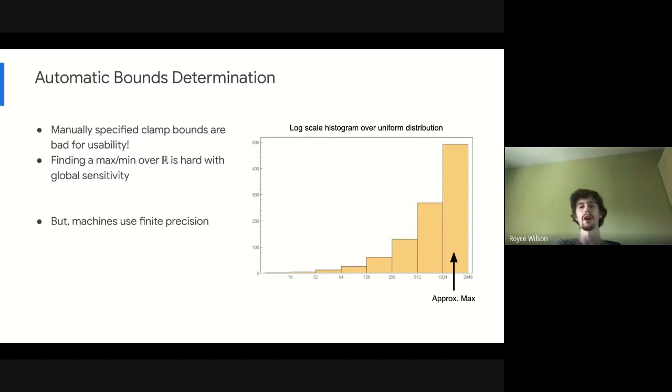And the result that we came or the algorithm that we arrived on is based on using this log scale histogram. We put all our input elements into our histogram and we find the most significant and the least significant bins that pass this threshold that we compute. And the threshold that we compute is based on privacy parameters and this kind of arbitrary success probability parameter that we talk about a little more in the paper.